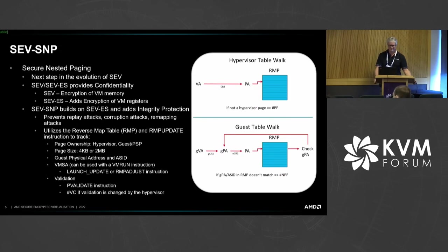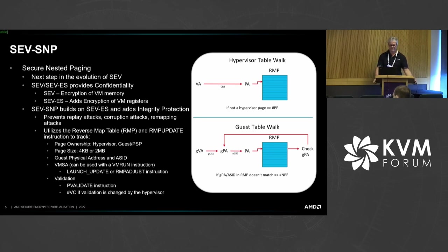With SNP we build on the confidentiality aspects of SEV and provide integrity protection. The integrity protection helps prevent replay attacks, corruption attacks, and that kind of thing. It utilizes the reverse map table — Michael Roth went into a whole discussion on how that all worked, so take a look at his slides.